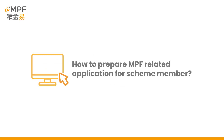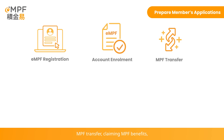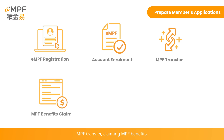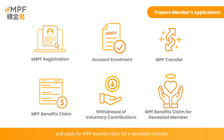How to prepare MPF-related applications for scheme members. Depending on your identity type, you can prepare applications for eMPF registration, account enrollment, MPF transfer, claiming MPF benefits, withdrawal of voluntary contributions on behalf of the scheme member, and apply for MPF benefits claim for a deceased member. The respective member will then be able to review and submit the application on the eMPF platform.